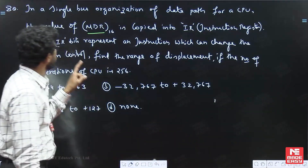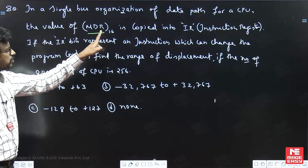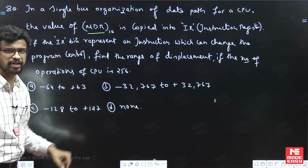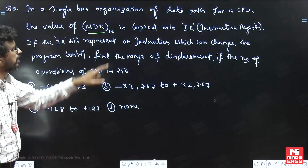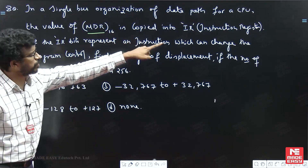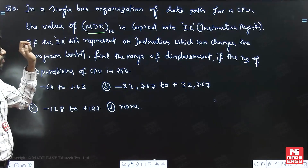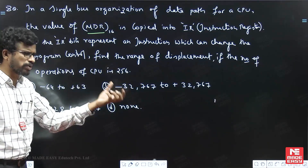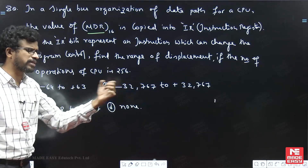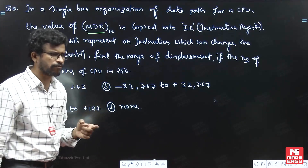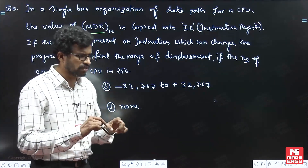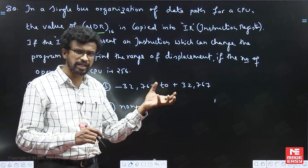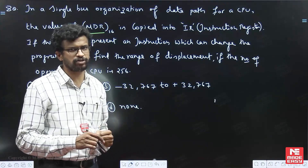MAR, the Memory Address Register, holds the address before it is placed on the address bus from the microprocessor. MDR is 16 bits, which means the data bus length is 16 bits. This MDR value is copied into IR — the Instruction Register. For any instruction, the first fetch is always the opcode fetch.